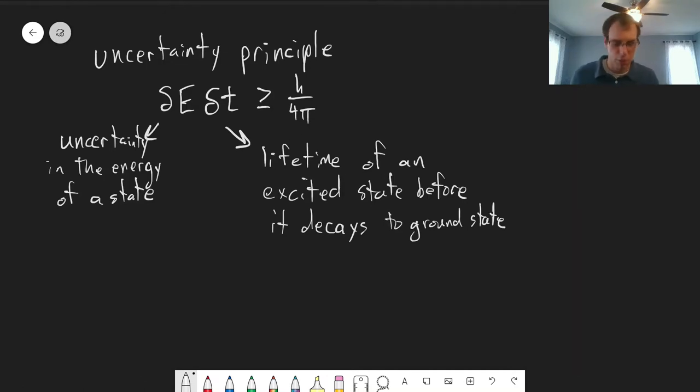And this is a fundamental principle related to all quantum objects, everything in the universe. And so this provides the narrowest possible line width that we can get and what's what we call the natural line width of a transition.